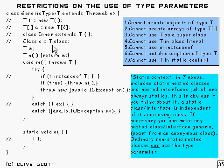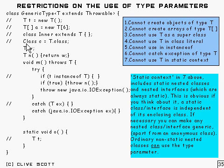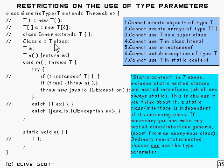You also can't use T as a class literal. I'll have to say more about class literals when we come to discussing reflection. Suffice to say there's a class called Class, and you can use it to inspect classes, look at methods, and get a lot of information. Putting .class on it as a literal is a type of literal, but that won't work with T — I'll say more about that later.